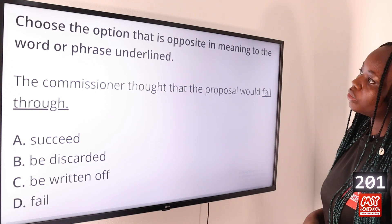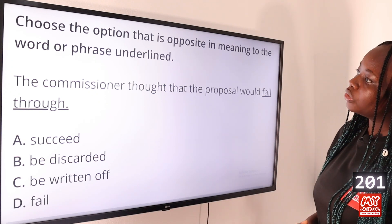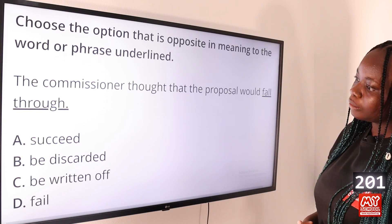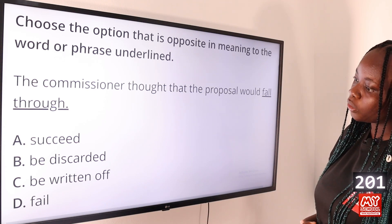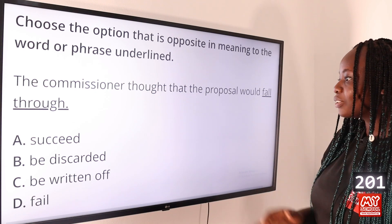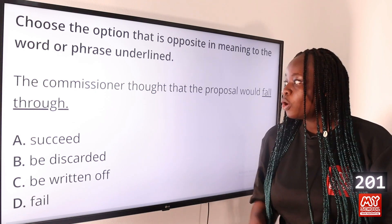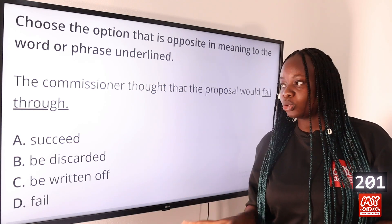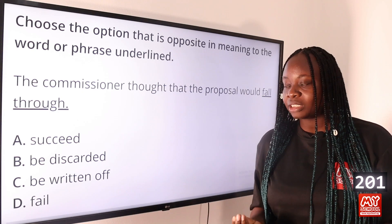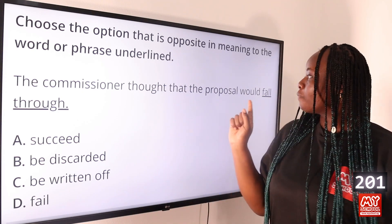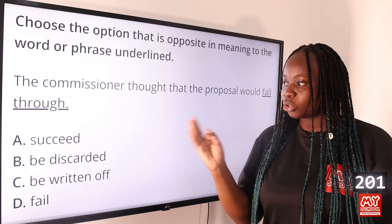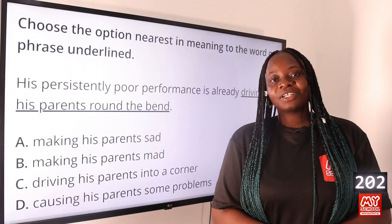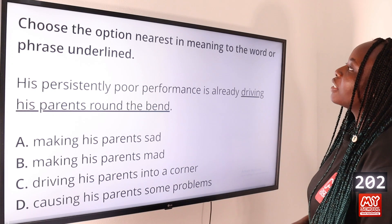Choose the option that is opposite in meaning to the word or phrase underlined: 'The commissioner thought that the proposal would fall through.' Option A: succeed, B: be discarded, C: be rated off, and D: fail. The answer is option A, succeed. When a plan falls through, that means it failed or did not materialize, so the opposite would be that the plan succeeded.